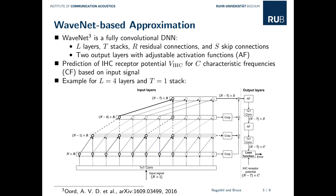Originally, the WaveNet was developed for an autoregressive generation of speech samples. However, in this work we slightly modified the network such that it predicts the inner hair cell potential for C characteristic frequencies simultaneously and in a feedforward fashion. In this figure, we see an example configuration using four layers and one stack. It takes an audio signal at the input and computes the inner hair cell potential for all considered characteristic frequencies at the output.